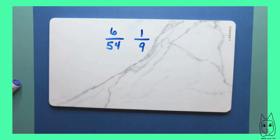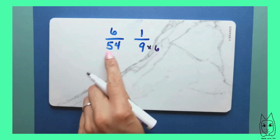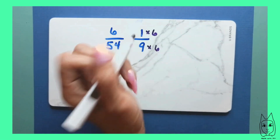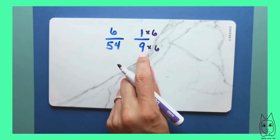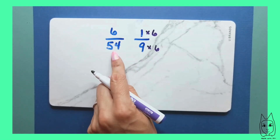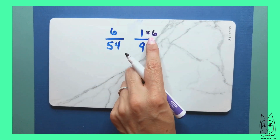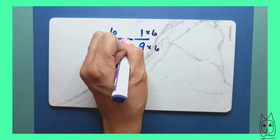Let's check if six over 54 is equivalent to one over 9. First, ask: is 54 a multiple of 9? It is — we know that nine times six is 54. This 1 would also need to be multiplied by 6, because each of these parts are being broken up into 6 — that's how we're getting 54 pieces. So this 1 would also be broken up into 6 equal parts, giving us six over 54. These two are equivalent.